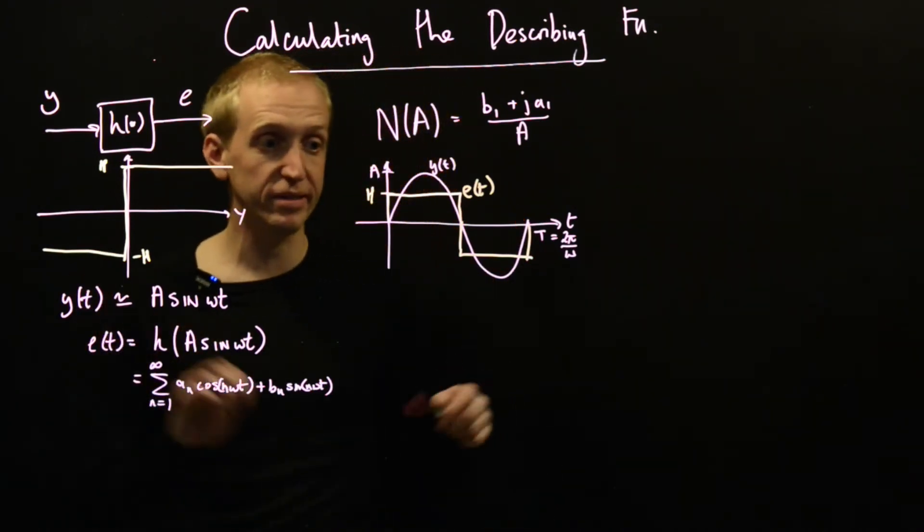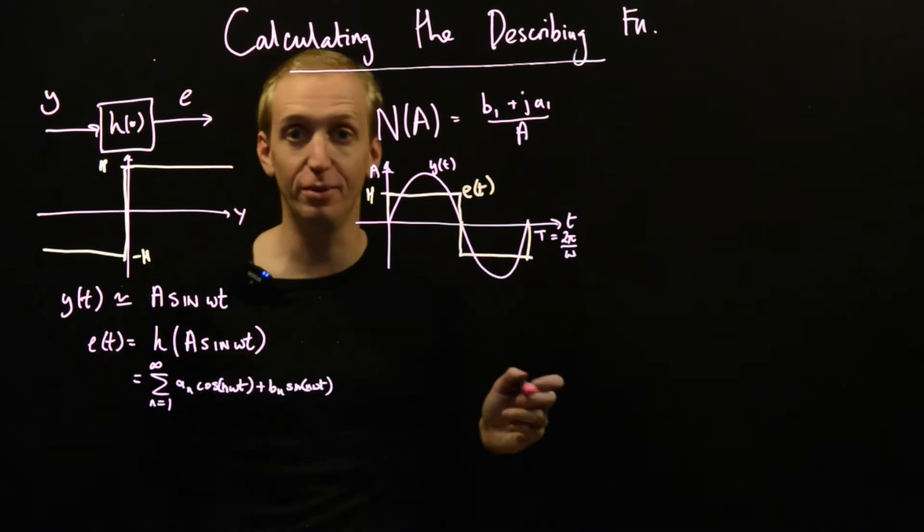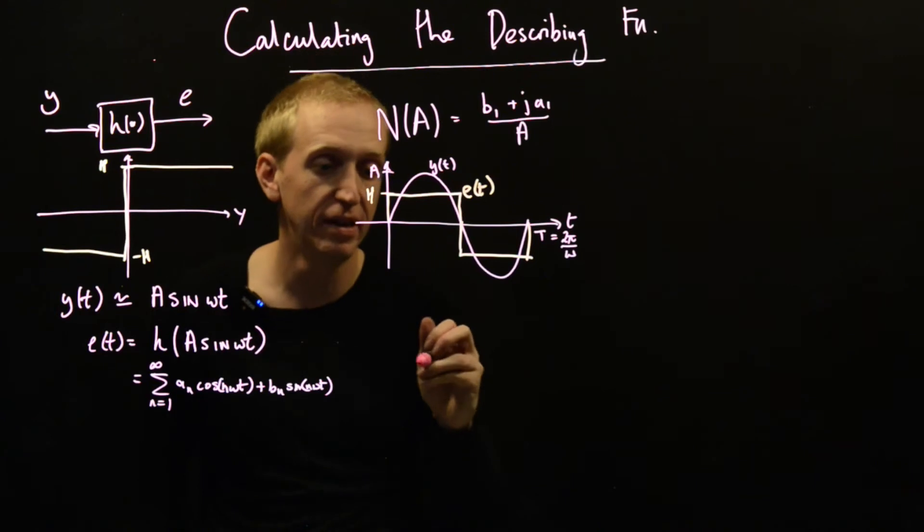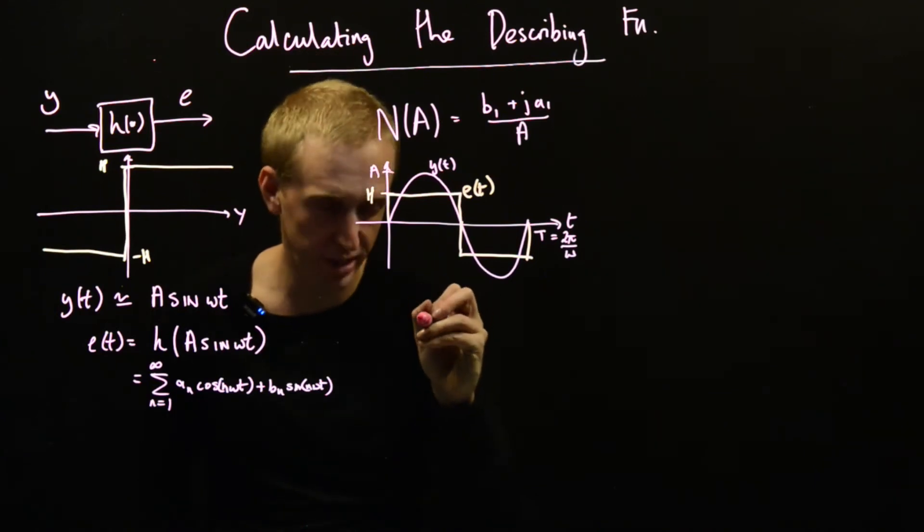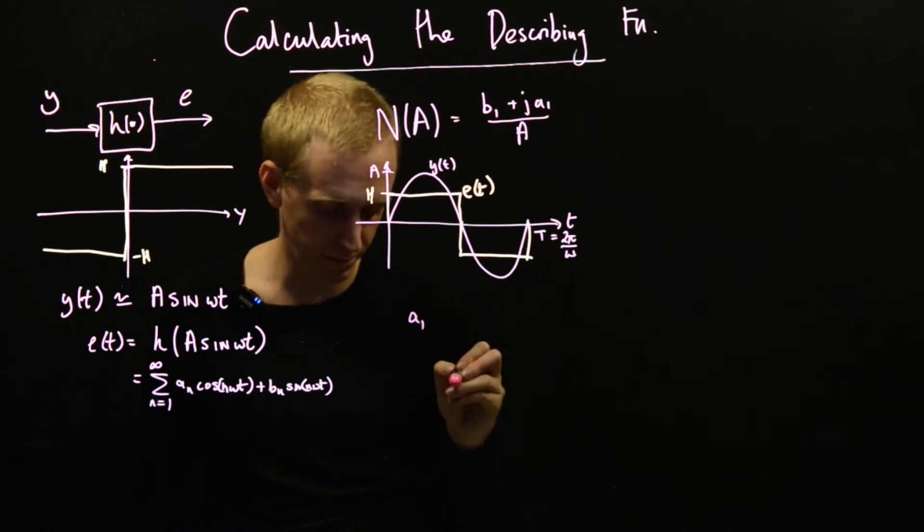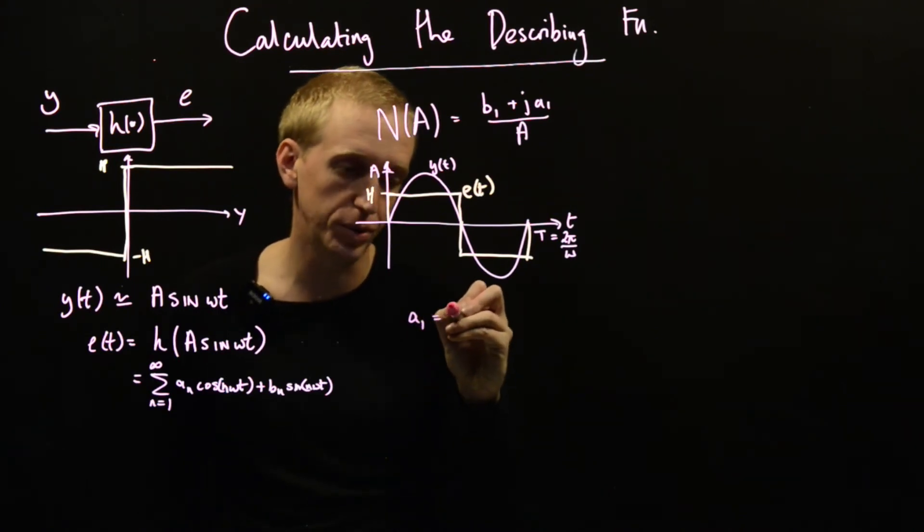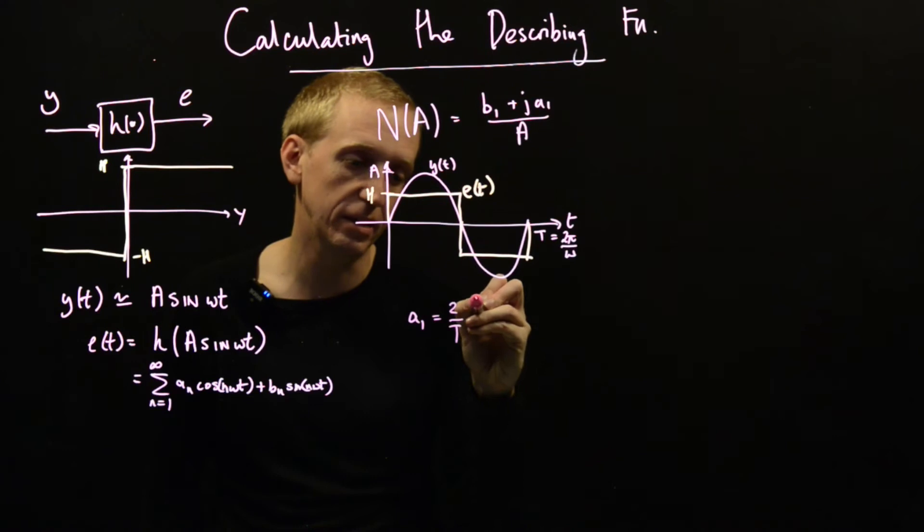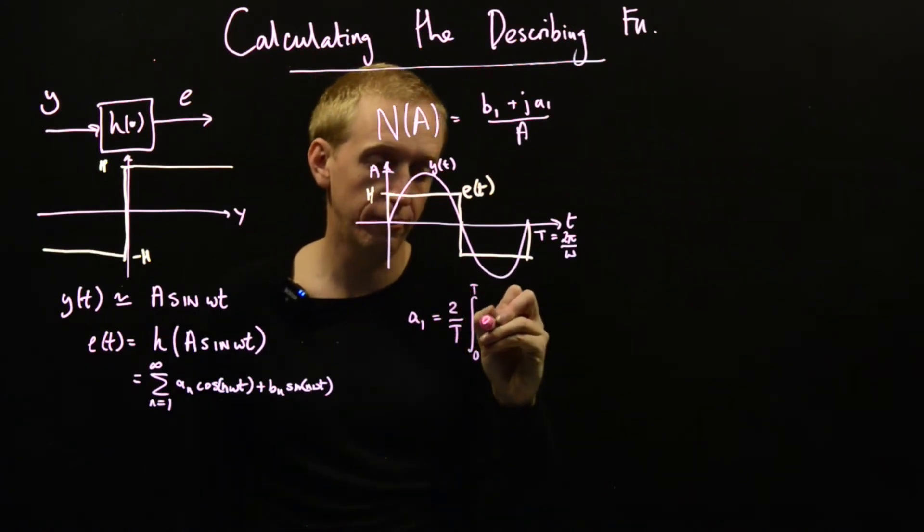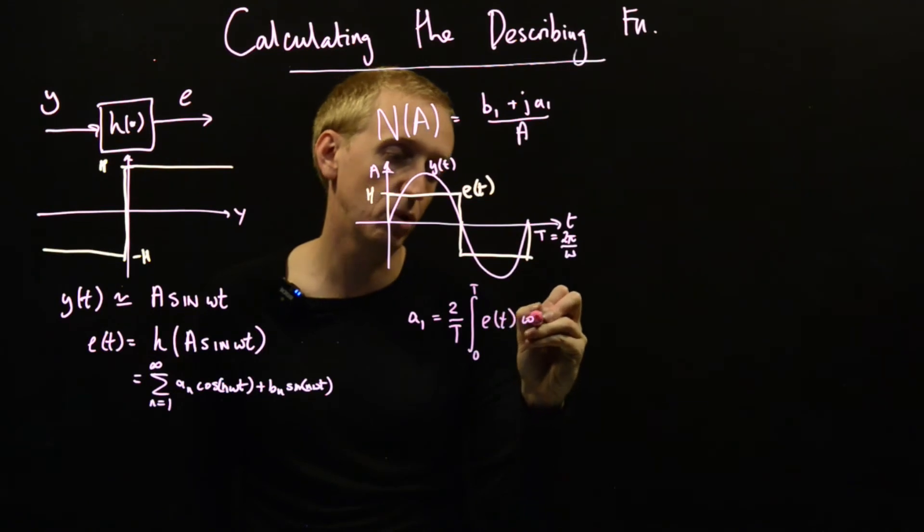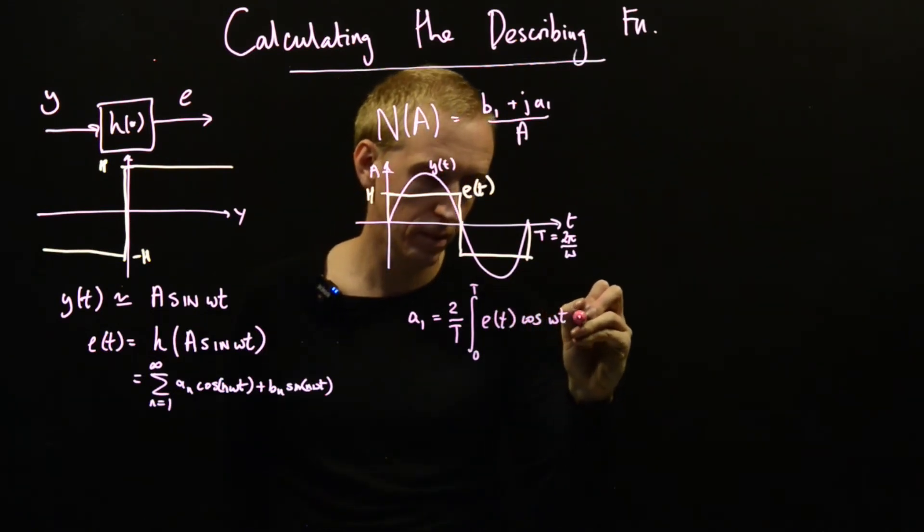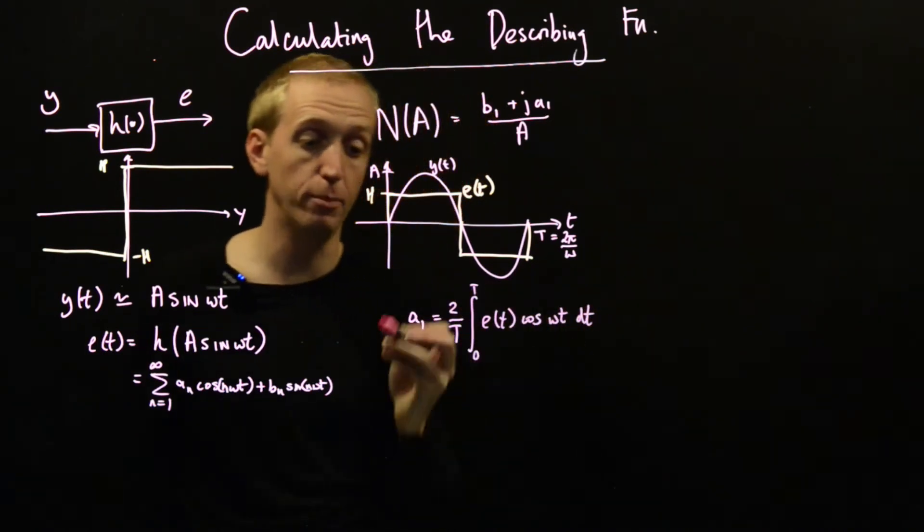And there's a formula for this, and I certainly hope you will have seen this formula at some point in your past. But anyway, this is what it is. And the first Fourier coefficient, or the a₁ term, this is equal to 2 over T integral from 0 to T of e(t) times cos(ωt) dt. So this is the formula for a₁.